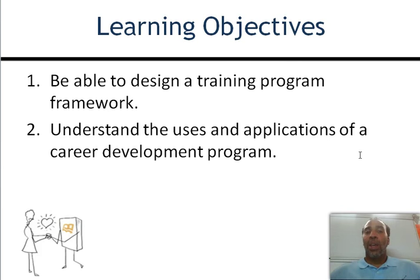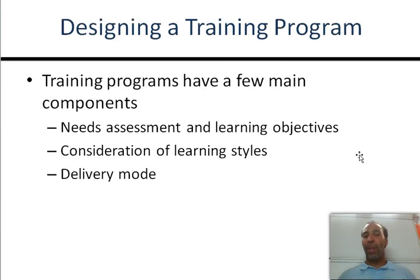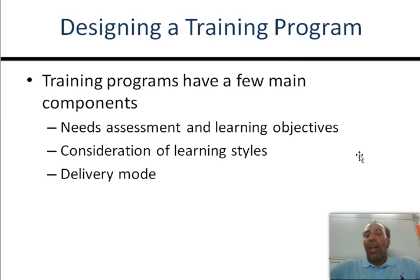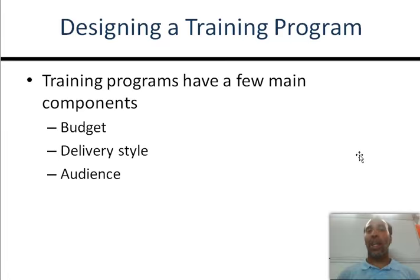Two more learning objectives: be able to design a training program framework and understand the uses and applications of a career development plan. Designing a training program — training programs have a few main components. Needs assessment and learning objectives: what do we need and what are the learning objectives? Then consideration of learning styles — some individuals have different learning styles and you have to figure out how to train toward that individual. And delivery mode — is it going to be online, person to person, or hybrid?